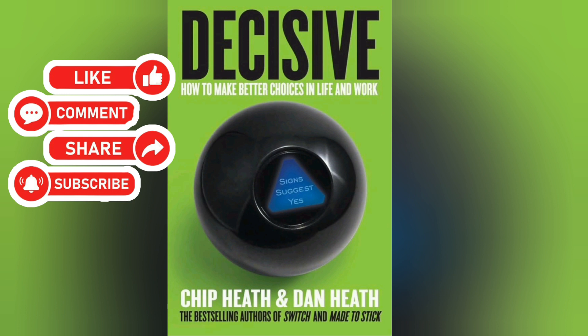That's why it helps to put some emotional distance between you and the decision before making a choice. Try the 10/10/10 perspective: how would you feel about your decision 10 minutes, 10 months, and 10 years from now? Another cool trick is to take on the perspective of a friend giving advice. Imagine your best friend came to you and explained the exact dilemma you face, asking what you should do. We often give much more objective advice to our friends, because we're not bogged down by the short-term emotions they struggle with in the moment.